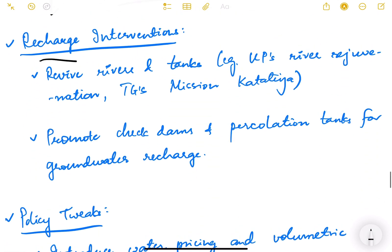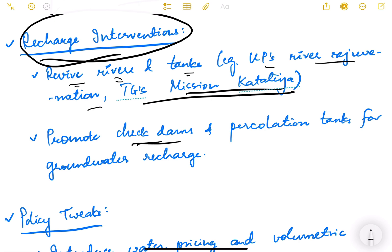Then we need to do a lot of recharge interventions also for groundwater recharge. We have to revive rivers and tanks, for example in UP river rejuvenation, Telangana Mission Kakatiya basically to rejuvenate our existing irrigation systems. Promote check dams and percolation tanks for groundwater recharge. Rainwater harvesting structures need to be promoted at a very large scale.